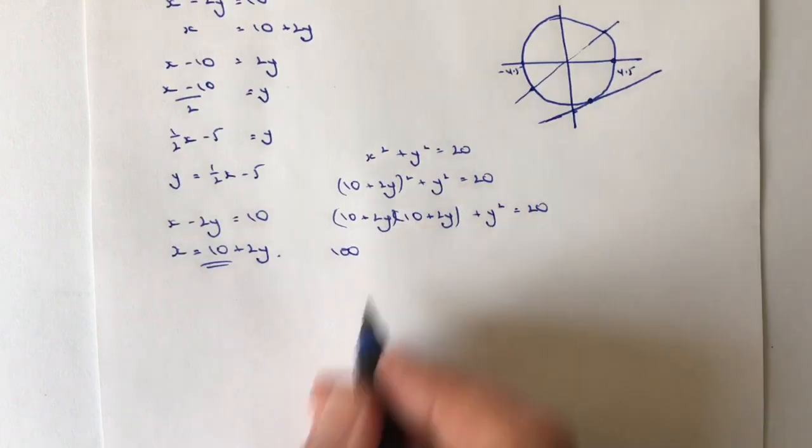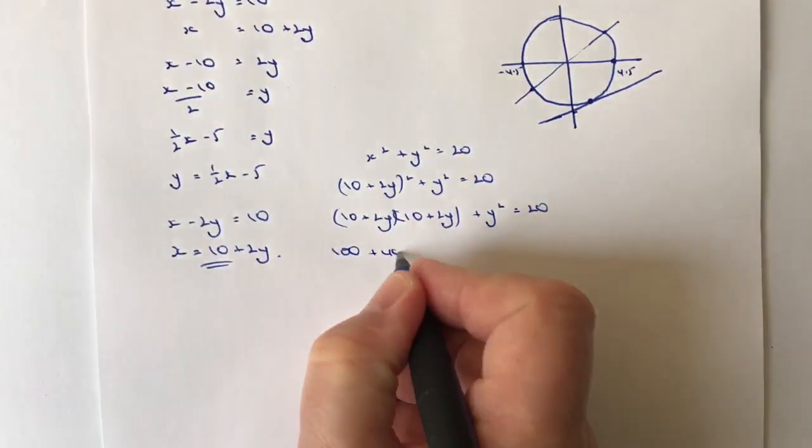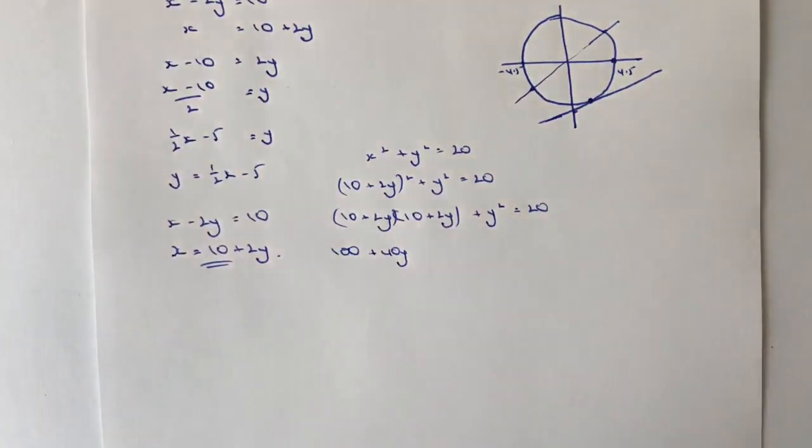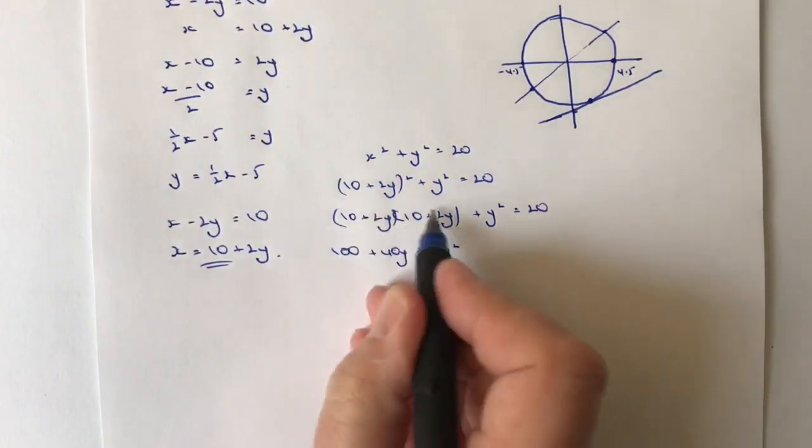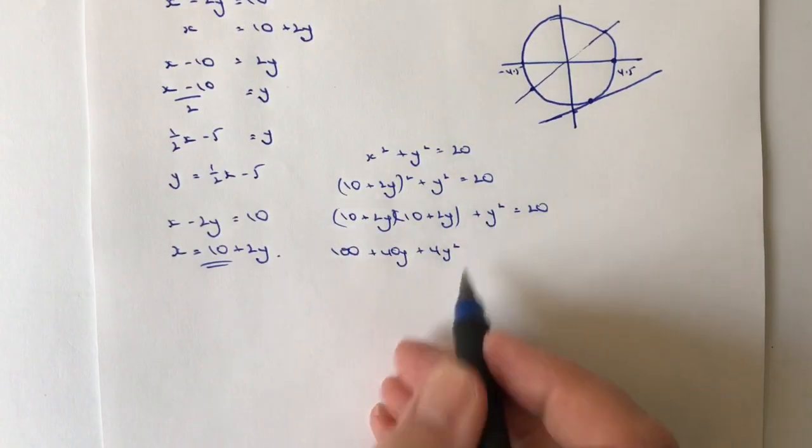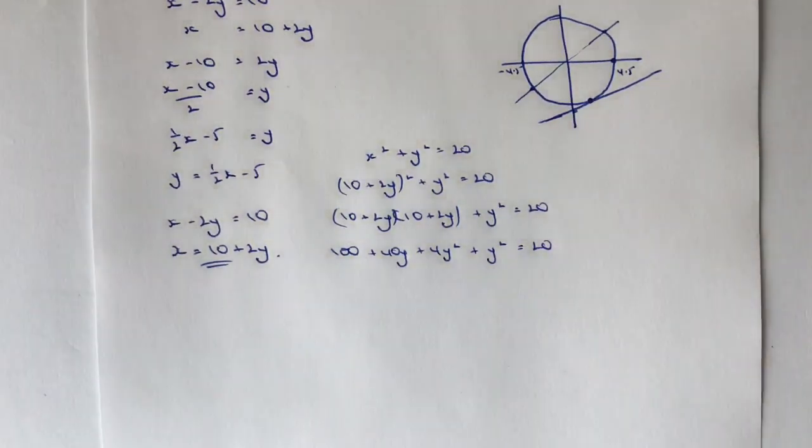And then I've got plus 20y plus 20y, well that's going to be plus 40y. And then I've got 2y times 2y, well that's going to be plus 4y squared. Now don't forget that is the expansion here, but I've also got this y squared at the end here.